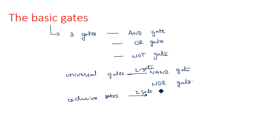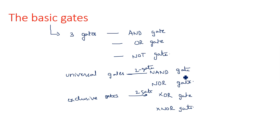The two exclusive gates are XOR gate and XNOR gate. All these gates have separate truth tables and applications. Depending upon their truth table, we choose whatever gate we need. NAND gate and NOR gate are called universal gates because they can be used to realize any type of logic gate. Exclusive gates are XOR and XNOR, which are quite different from the others.